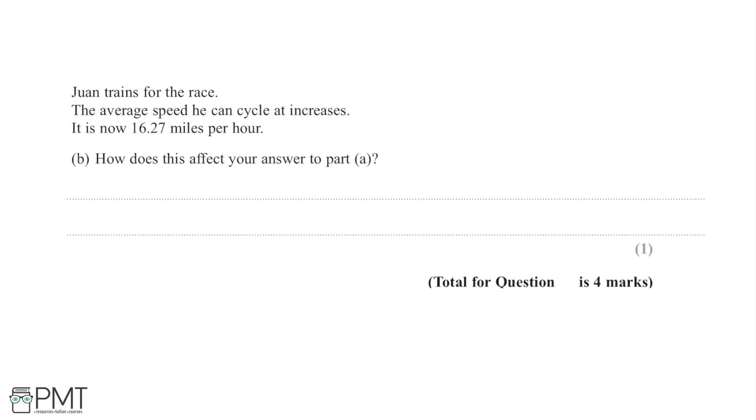I'm now told that Juan trains for the race, the average speed he can cycle at increases, and it's now 16.27 miles per hour. We're asked how does this affect your answer to part A of the question.